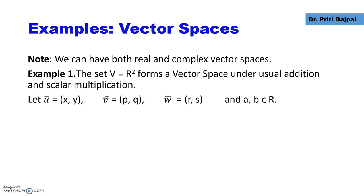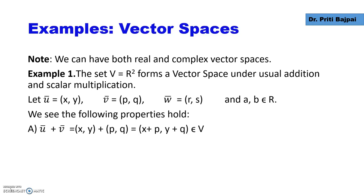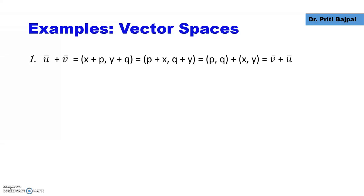The first example is: if our set V is R², does it form a vector space under the usual addition and scalar multiplication? When we add two vectors U and V, the end result is (x+p, y+q), which is again a point in the plane. So closure is satisfied. If we multiply U by a scalar A, we again get a vector in the plane. So both closure properties are satisfied.